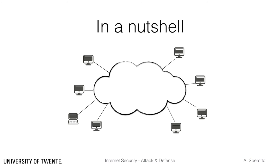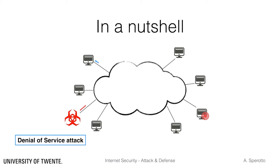We talk about denial of service attacks when an online system, the target, is made unable to deliver service to users due to unwanted malicious traffic from an attacker. This happens usually because the attack depletes the resources of the target system, for example bandwidth or processing power.